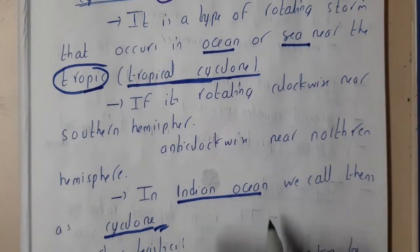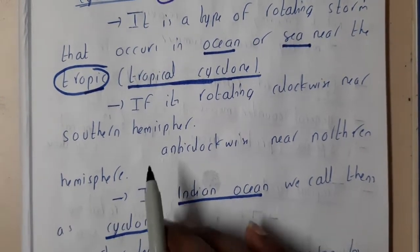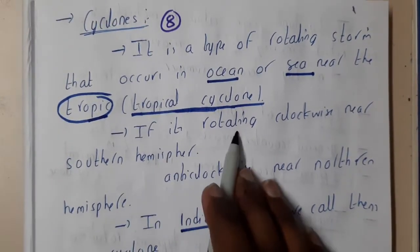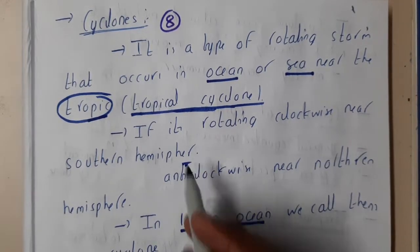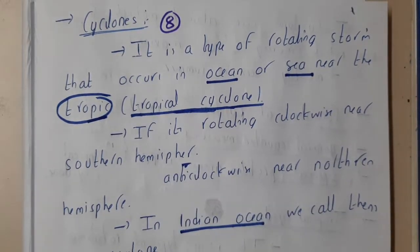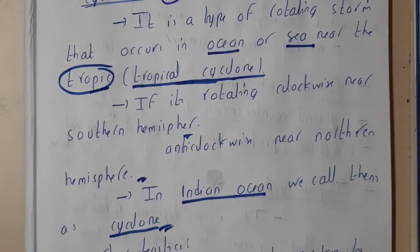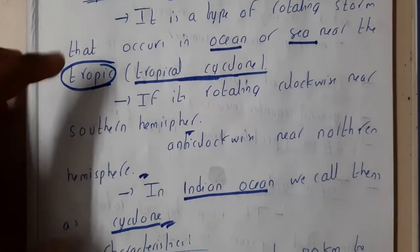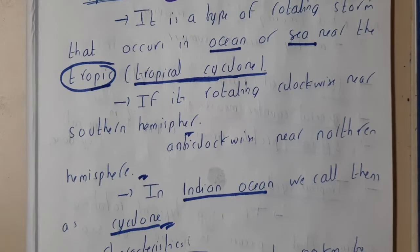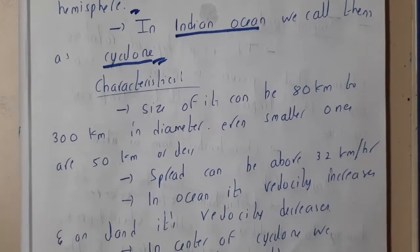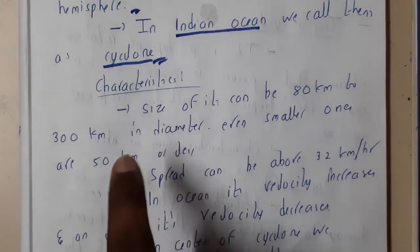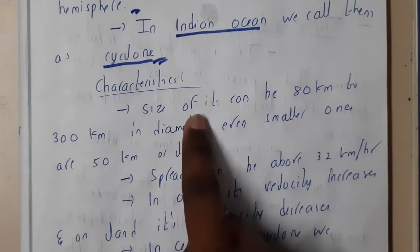If the cyclone is rotating clockwise near the southern hemisphere it will rotate clockwise, and near the northern hemisphere it will rotate anti-clockwise. This is a small introduction about cyclone. Now let us go through the characteristics.